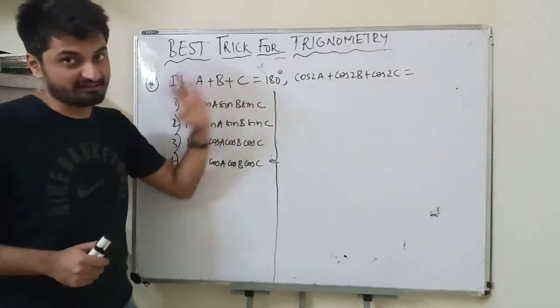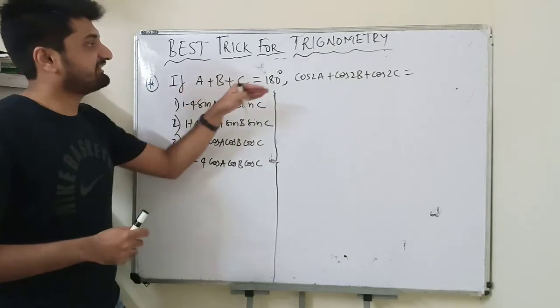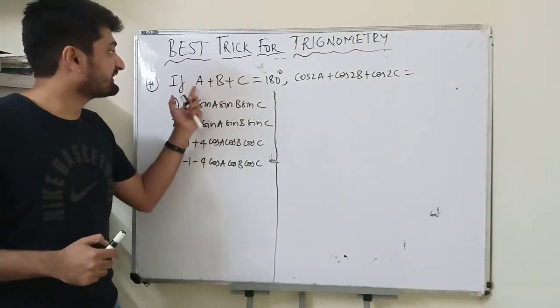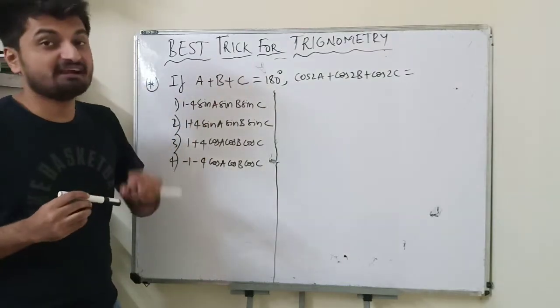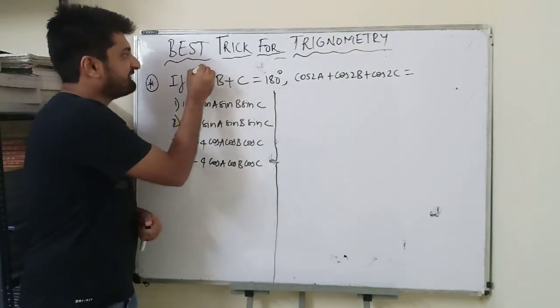Basically, we are given a condition of angles. Whenever we are given a condition of angles, we can give values for the respective angles which satisfy the condition. That is the trick here.